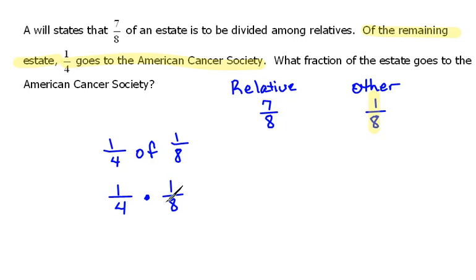Do not be tempted to cancel the 4 and the 8. These are both denominators, that's not eligible. We would just have to multiply straight across the top: 1 times 1 would be 1, and straight across the bottom: 4 times 8 would be 32. So 1/32nd of the estate is going to go to the American Cancer Society.